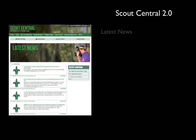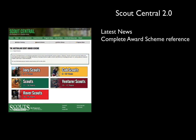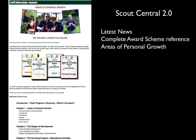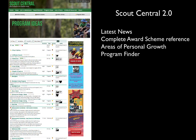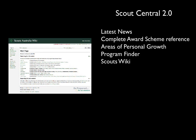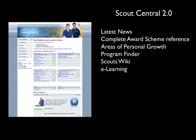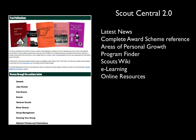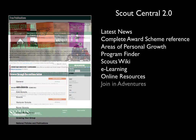Is your head spinning with all this cool stuff? Let's recap on what you'll find in Scout Central 2.0. There is the latest news, the complete award scheme reference from Joey Scout to Rovers, the areas of personal growth unpacked, a program finder with over 1,000 activities, games, and complete programs for you to use, Scouts Wiki — the growing encyclopedia of scouting that you can and should contribute to — and e-learning with over 75 world-class learning modules, soon to be a hundred.